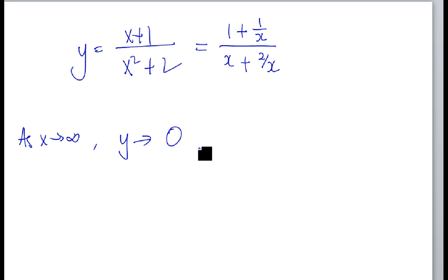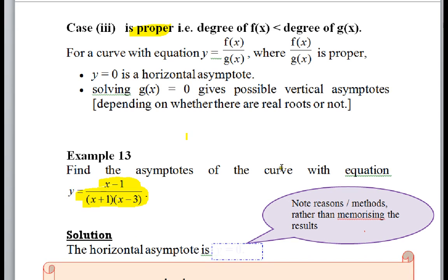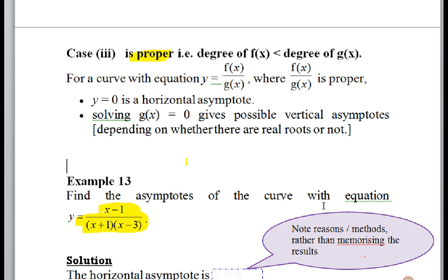So y equals 0 is always a horizontal asymptote. Don't just accept the result, but it all makes sense. It should make sense—math is the most logical subject you can ever find.